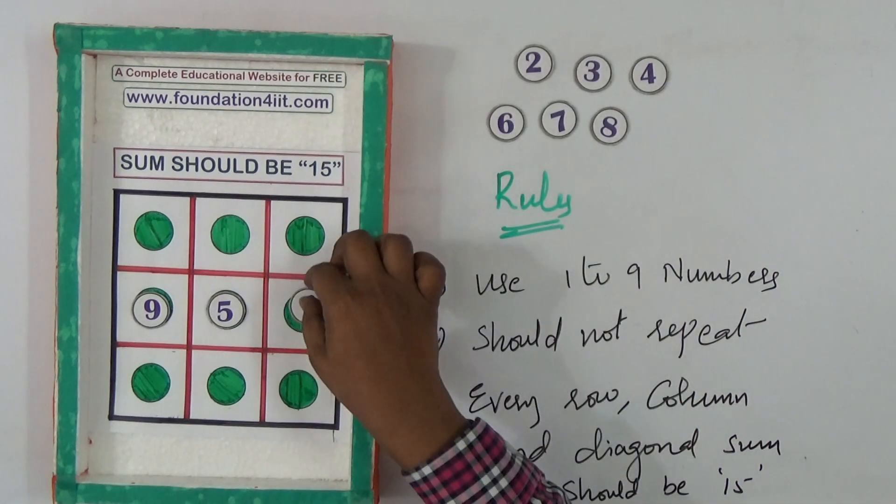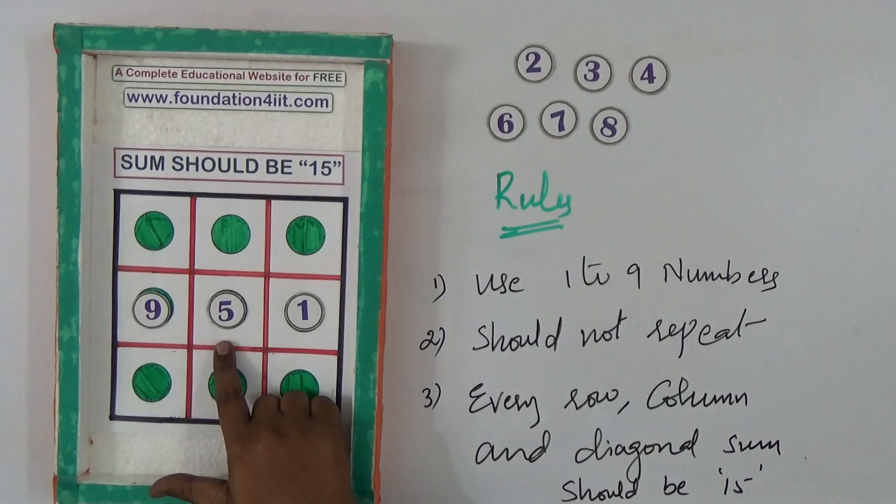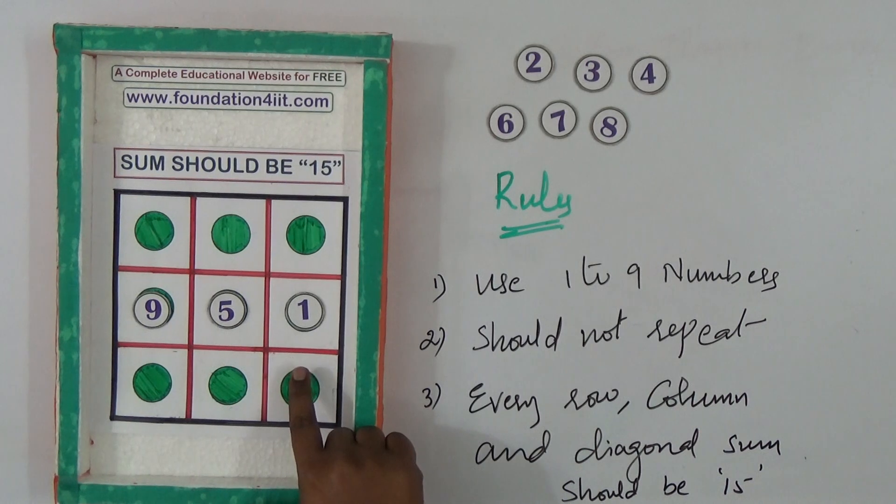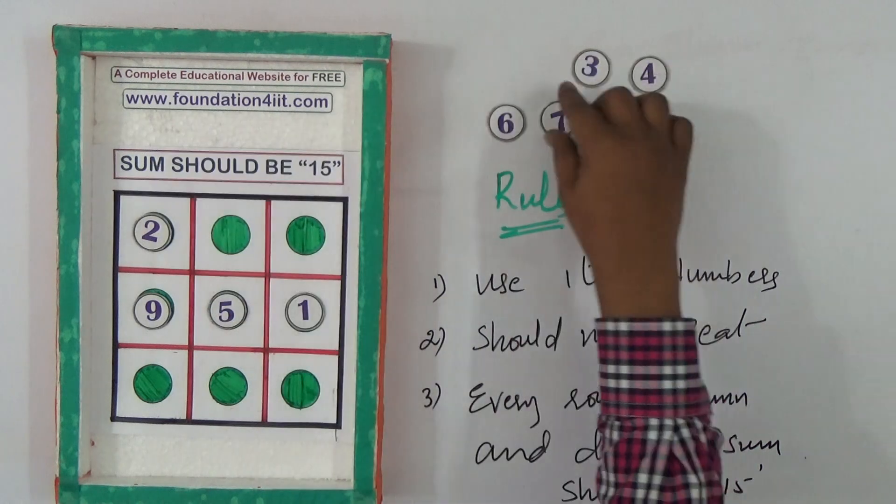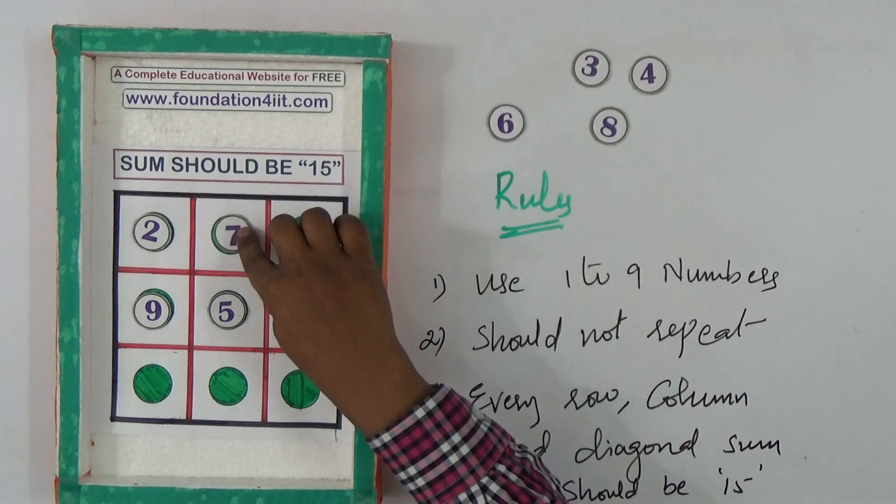For example, observe here, 9 plus 5 is 14, 14 plus 1 is 15, right? And 2, and this is 7.